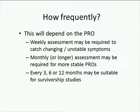The next thing to think about is how frequently you're going to assess. This will depend on the PRO — for example, weekly assessment might be required if you're trying to catch a changing or unstable symptom, whereas monthly or even longer assessment periods might be required for more stable PROs, and every six or 12 months might be suitable for survivorship studies.